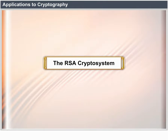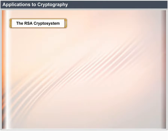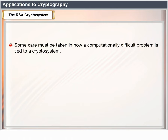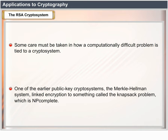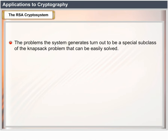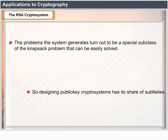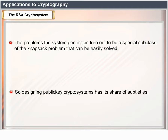The RSA Cryptosystem: some care must be taken in how a computationally difficult problem is tied to a cryptosystem. One of the earlier public key cryptosystems, the Merkle-Hellman system, linked encryption to something called the knapsack problem, which is NP-complete. However, the problems the system generates turn out to be a special subclass of the knapsack problem that can be easily solved, illustrating that designing public key cryptosystems has its share of subtleties.